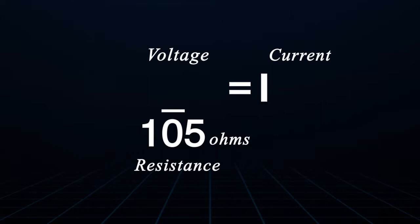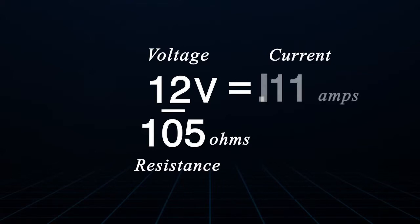So using Ohm's Law, if we take the voltage where this would be used in a 12 volt system, we take 12 volts, divide that by the resistance 105 ohms, we would get the current that would go through the coil which would be approximately 0.11 amps.